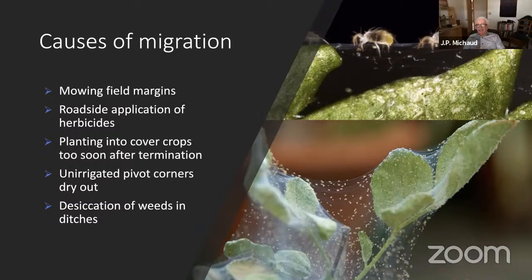Ideally, terminate cover crops two weeks before your summer crops emerge. I know that may not always be practical, but ideally you want at least a week or two for everything to be dead in the cover crop before your summer crops emerge. Mite eggs can continue hatching on dead host plants for up to two weeks after the plants are killed. If you don't wait, those mites will be right in the middle of the crop and won't even need to migrate to cause problems.